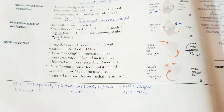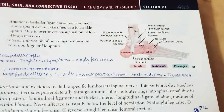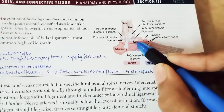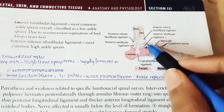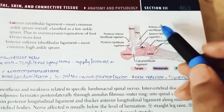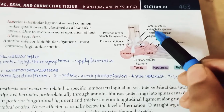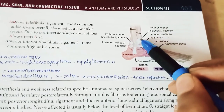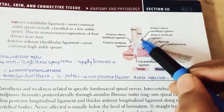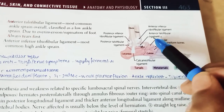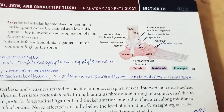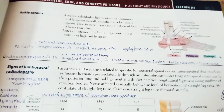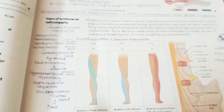Next, coming to ankle sprains: the most common ankle sprain involves the anterior talofibular ligament, which is the most common low ankle sprain. The anterior inferior tibiofibular ligament is the most common high ankle sprain. So: low ankle sprain = anterior talofibular ligament; high ankle sprain = anterior inferior tibiofibular ligament.